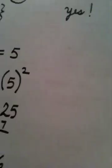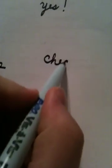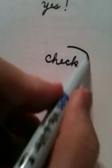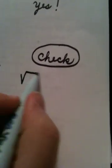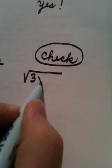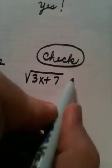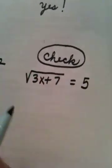Now, again, anytime you have a radical, you have to check. A radical equation, you have to check your answer. The way you check your answer is you go back to the original equation, which had the radical in it, and you plug in what you think the answer is. We think the answer is 6.